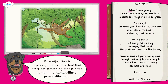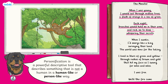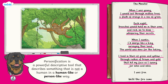The Monster. When I was young, I would sail through endless trees, a flash of orange in a sea of green. Each night, branches would hold me in their arms and rock me to sleep, whispering their secrets. When I awoke, I'd emerge like a king, surveying their land — the world was mine for the taking. I lived in blurs of green and yellow, through rushes of brown and gold that hit my face as I swung for miles and miles. I was free until the fire came.